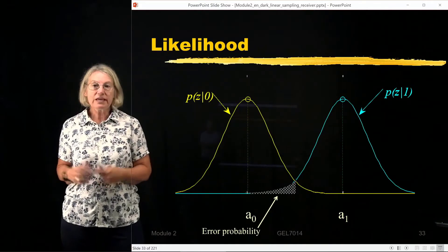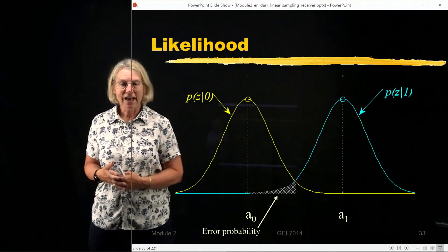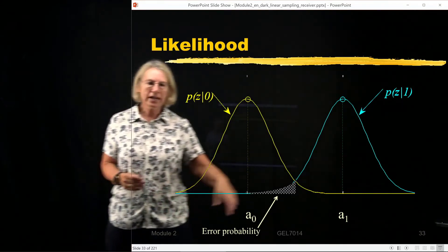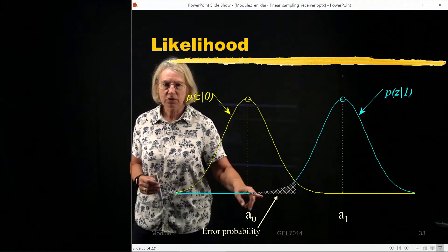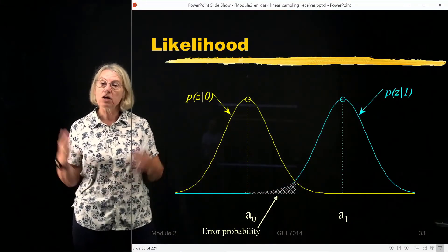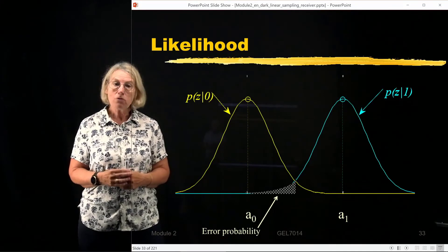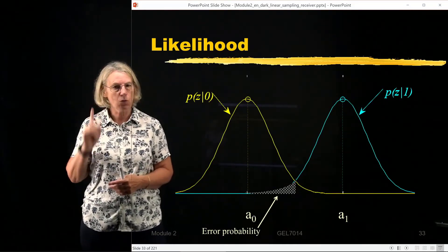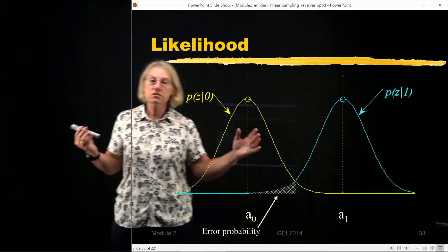When we use this plot, we get some added information, added intuition on what is going on here. Because if we look at the tail of this distribution, that tells us the probability of error. Because when are we going to make a mistake? Suppose that we truly sent a 1. We truly sent a 1, but because of the noise,